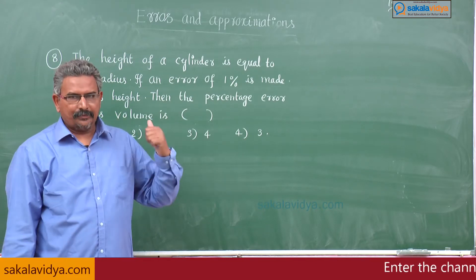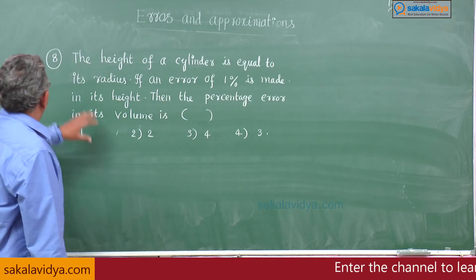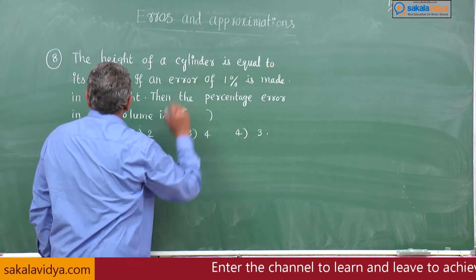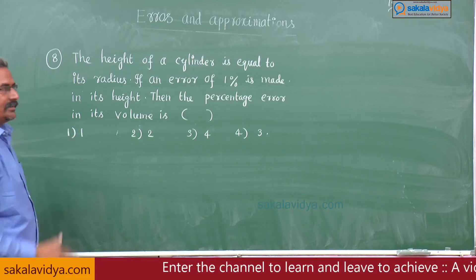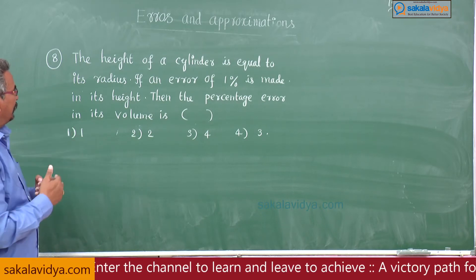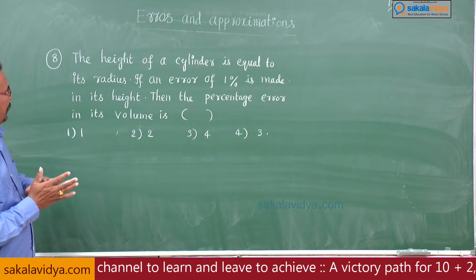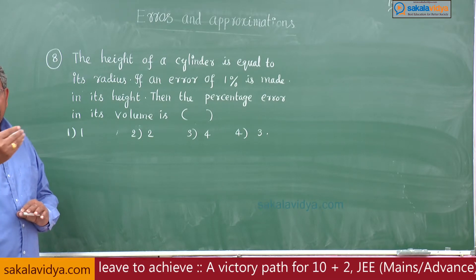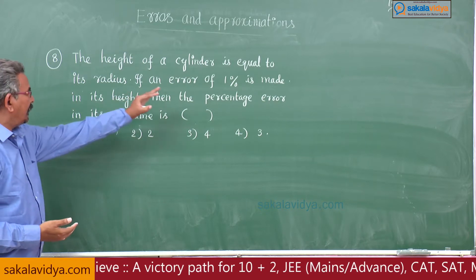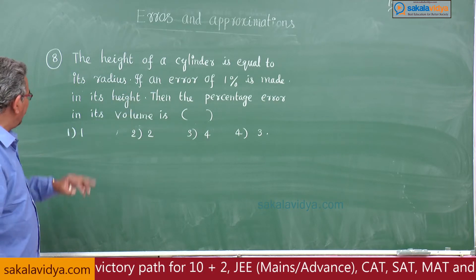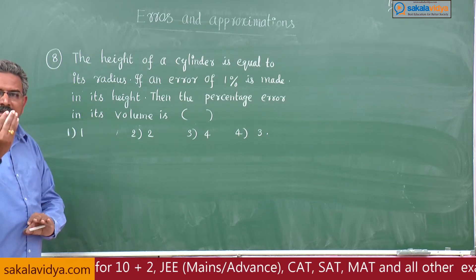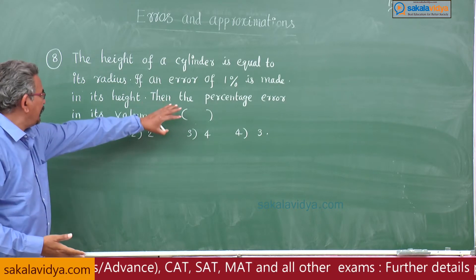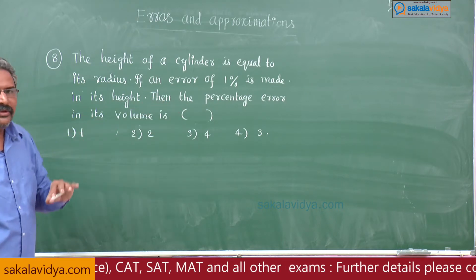Let us discuss the 8th problem. The height of a cylinder is equal to its radius, meaning r is equal to h. If an error of 1 percent is made in its height, that means delta h by h into 100 is given as 1 percent. We have to find out the percentage error in its volume.